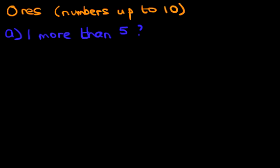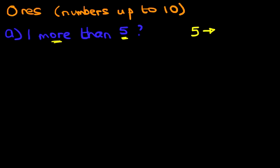The first method is simply counting. We start at the number we're going from, which is five. And because we're doing more than, we're going to count forwards. So counting forwards from five — how much are we going to count? We're going to count forward by one. So what is the next number after five? That's right, it is six. That is our answer: six.